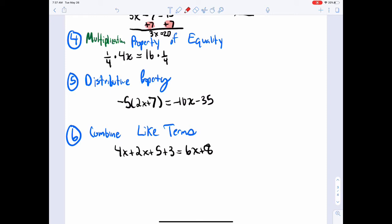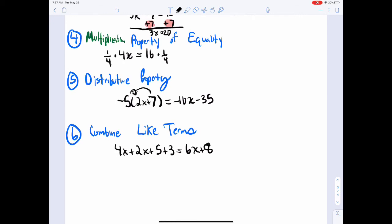That is that property. Number 5 is one we've seen a lot, that's the distributive property. You know, handing out that negative 5, getting negative 10x minus 35. And then combining like terms we've seen that. If you combine like terms you end up with just what you get over there.